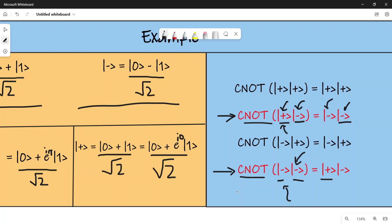E^(2πi) will eventually become one, so that would mean the result would be ket plus. I hope